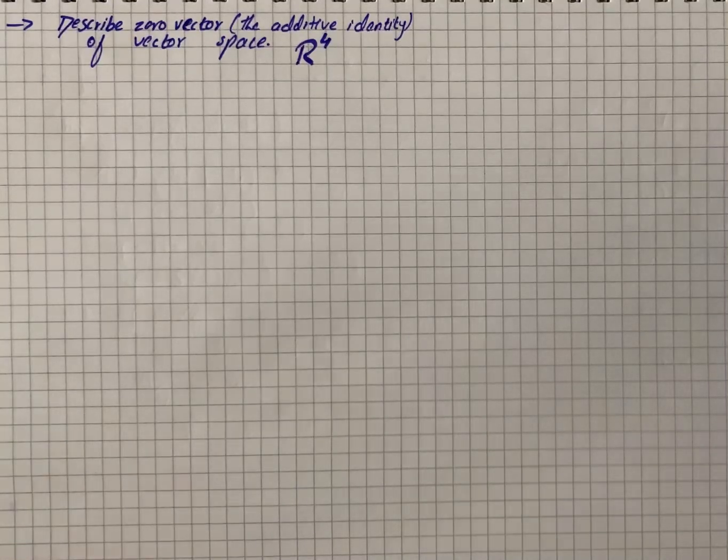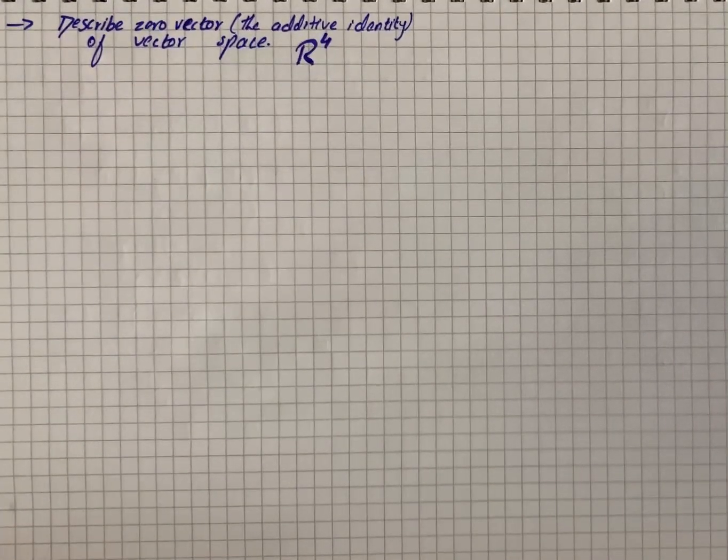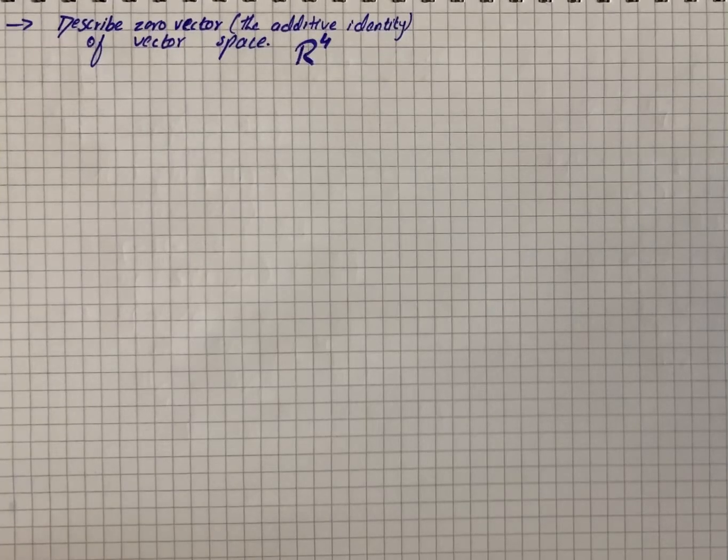Hey, we have a question that says describe the zero vector, the additive identity of the vector space R4.